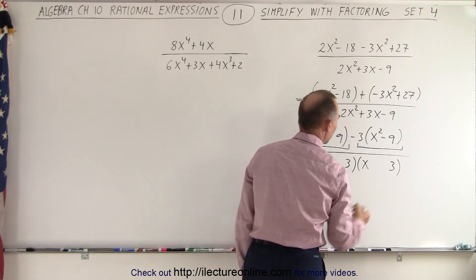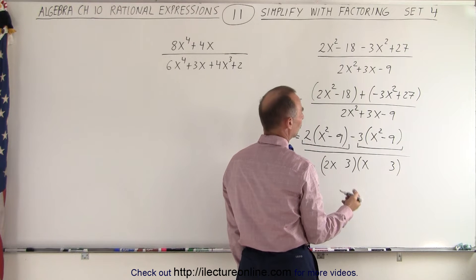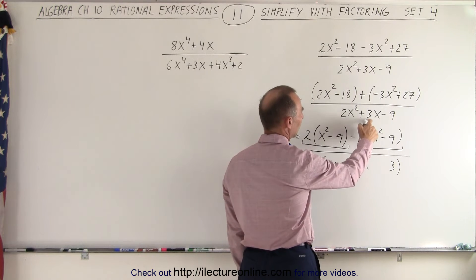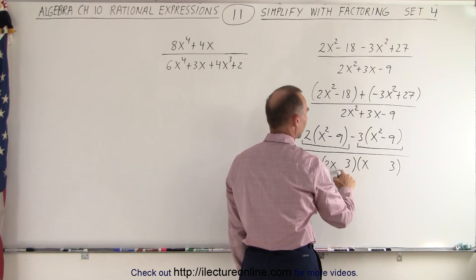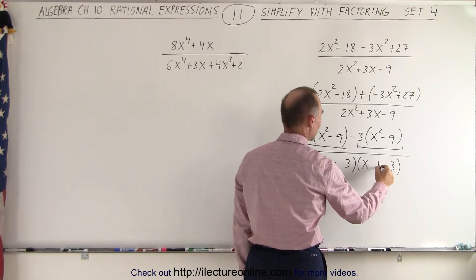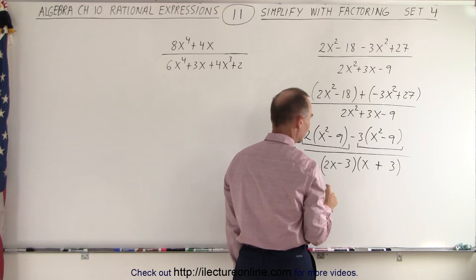So let's try that. Let's try a 3 and a 3. And then sign-wise, 1 must be positive, 1 must be negative, but we end up with a positive 3x. That means we want a positive sign over here and a negative sign over here.